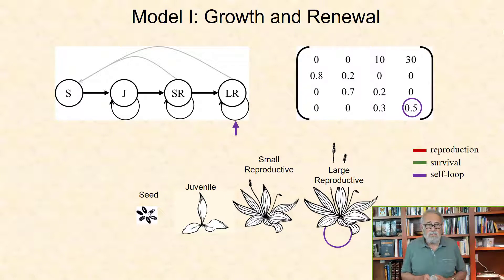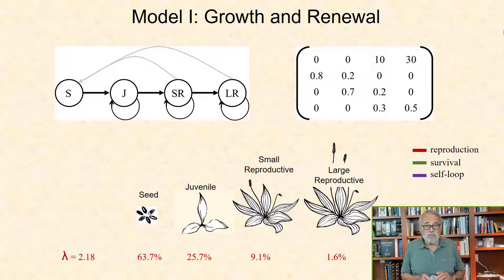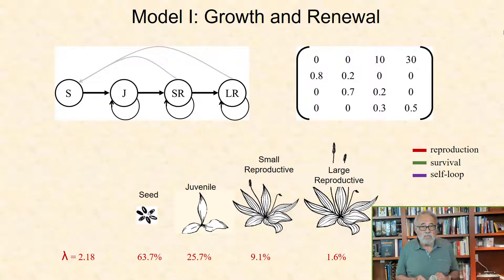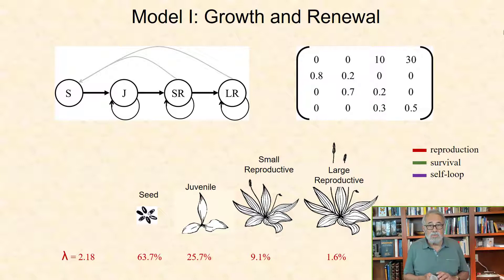With the values specified in this matrix for Model 1, the growth rate of this population is 2.18, and the stable stage distribution is 63.7, 25.7, 9.1, and 1.6% for the seed, juvenile, small reproductive, and large reproductive classes, respectively.